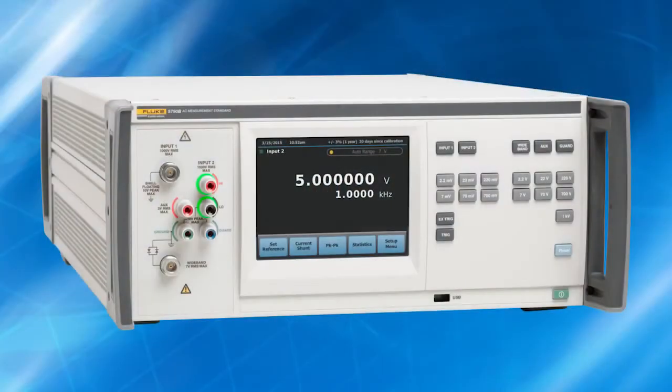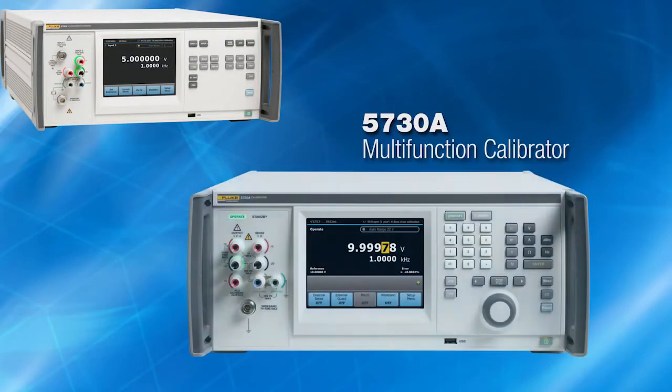The 5790B is designed to meet the complete AC voltage and wideband verification requirements of the Fluke Calibration 5700 series multifunction calibrators, including the 5730A, the 5720A, and the 5700A.